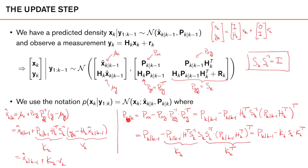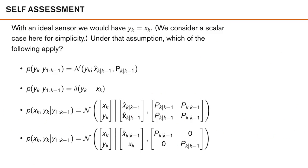We have now derived the Kalman filter using well-known results regarding Gaussian densities. This is important for at least two reasons: first, deriving the Kalman filter offers intuition into what it actually does; and second, understanding the derivation allows us to figure out how to adapt the equations if the underlying assumptions change slightly — for example, if we no longer have zero-mean process and measurement noise. We end this lecture with a self-assessment question where you can try out your intuition regarding correlation and the distribution of random variables.